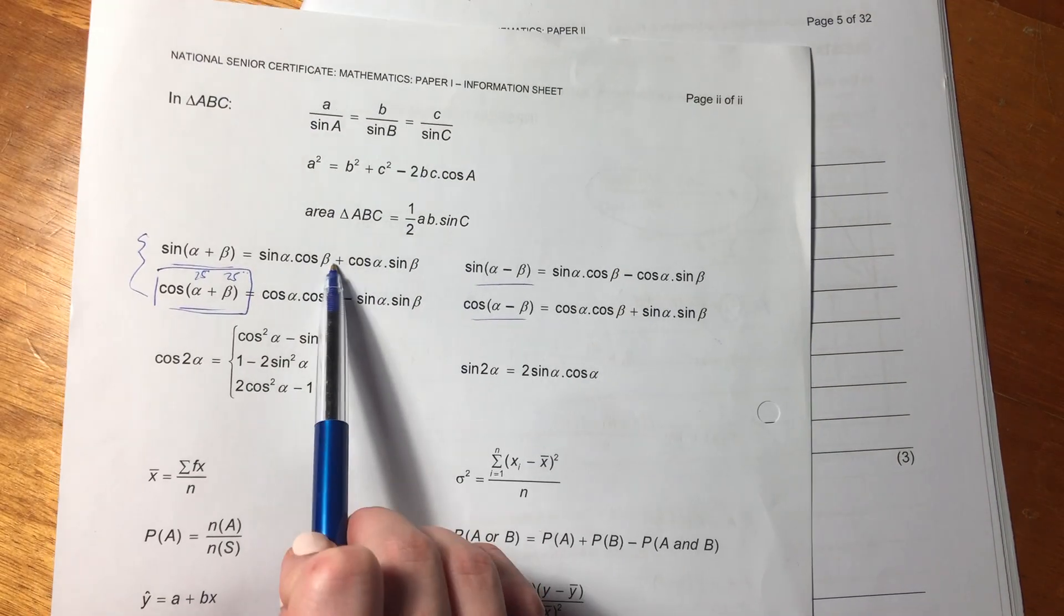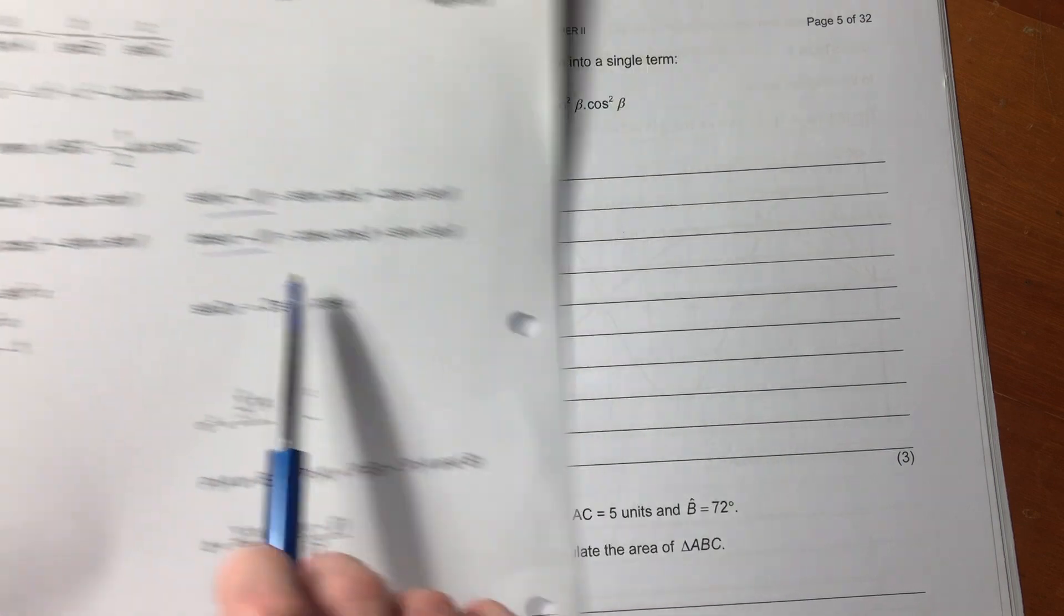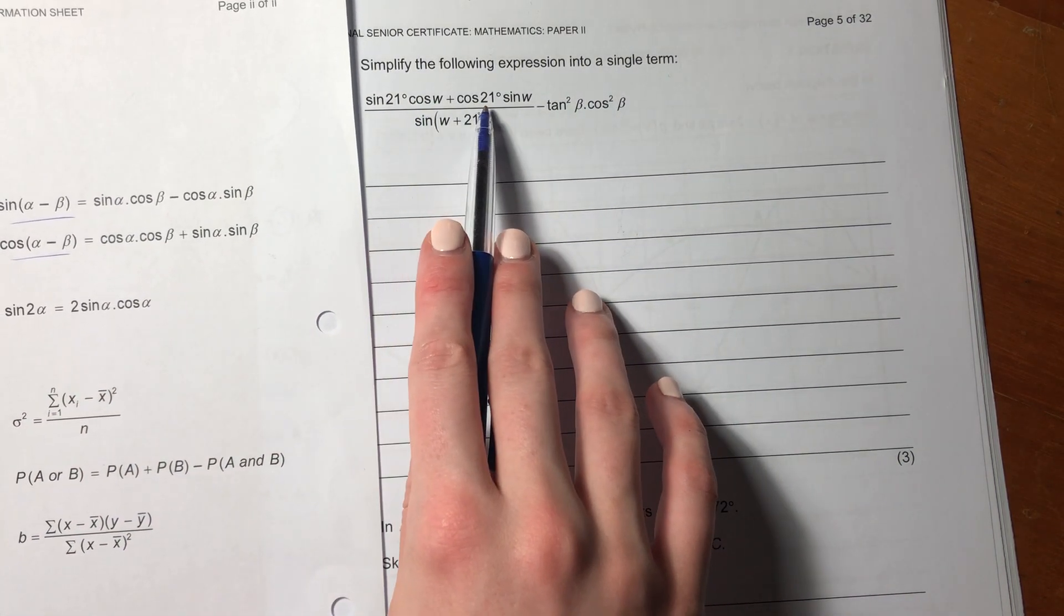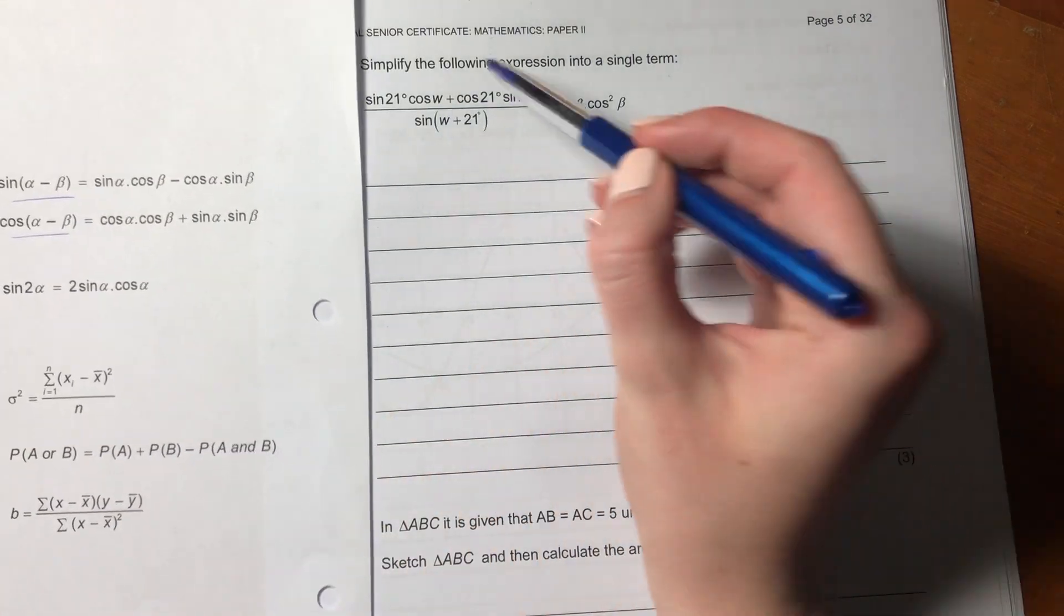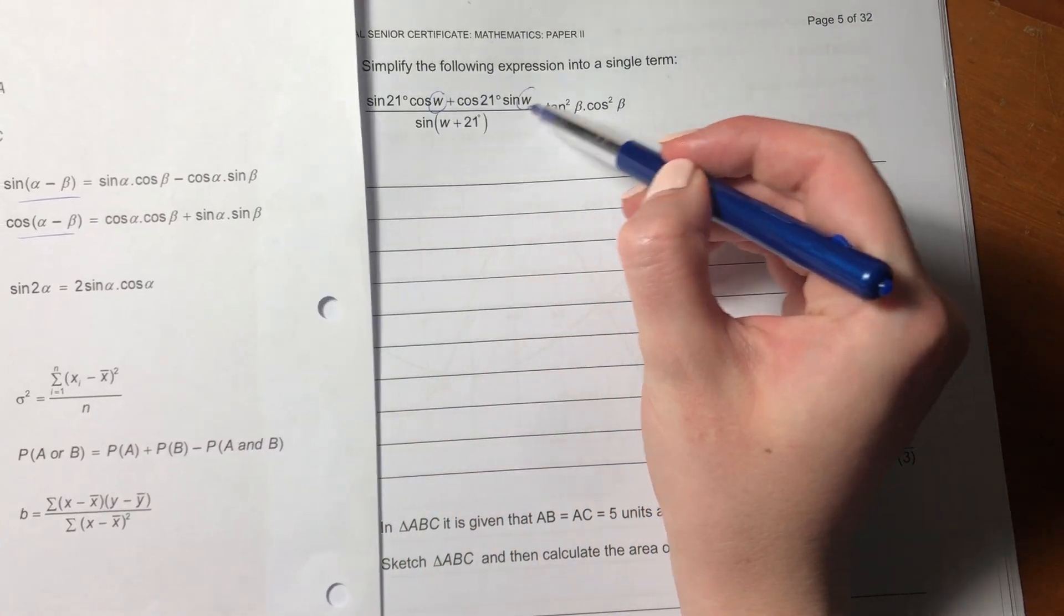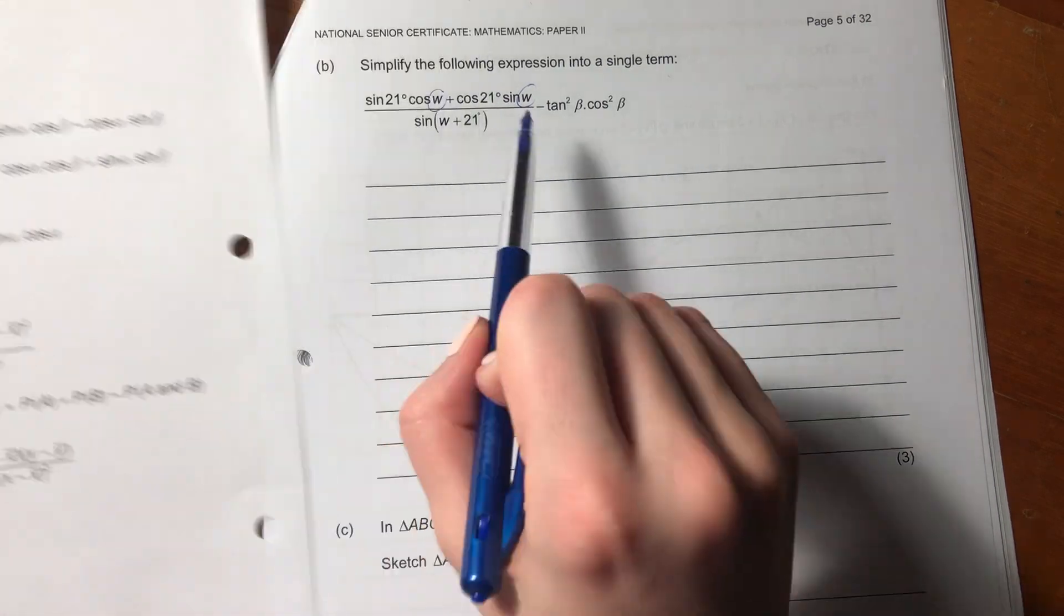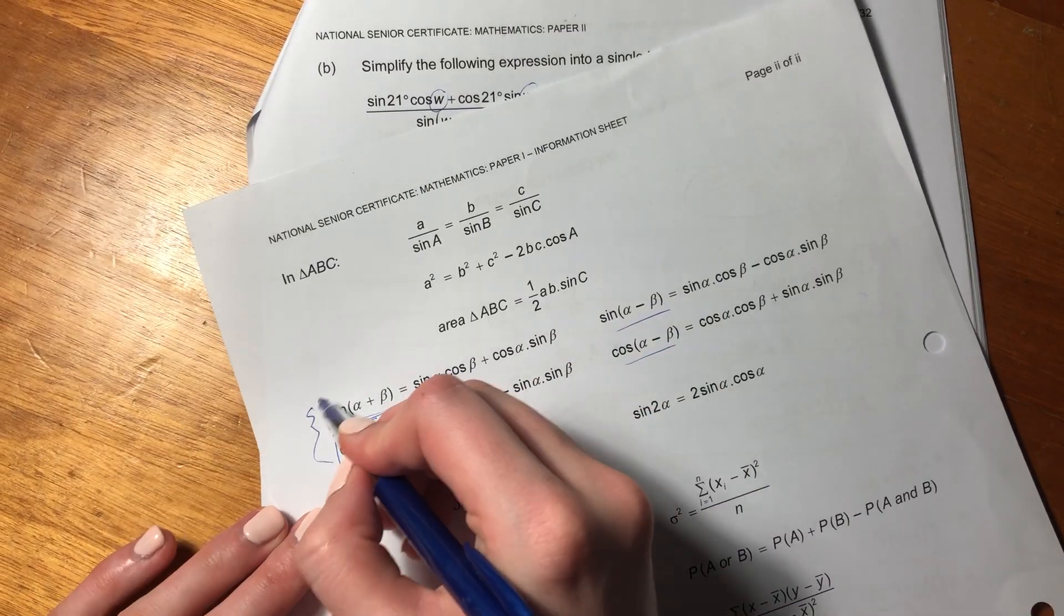We can see it's a plus, so we know it's one of these guys. And we can see that it goes alpha, beta, alpha, beta. So these two are matching and it's sine, cos, sine, cos, and cos, sine. So we know that we are looking at this identity here.